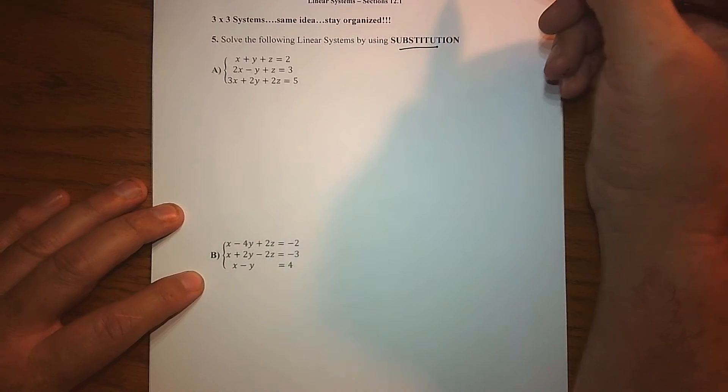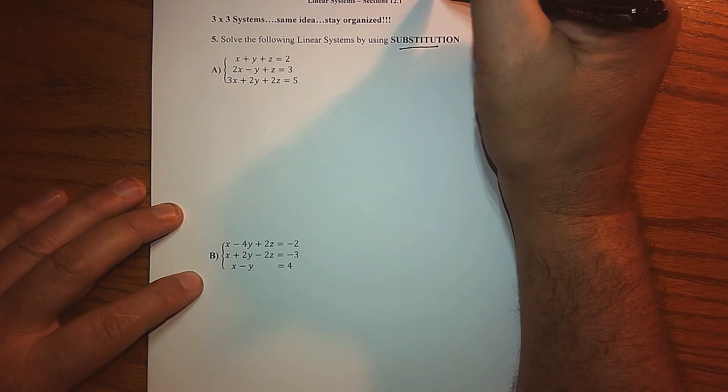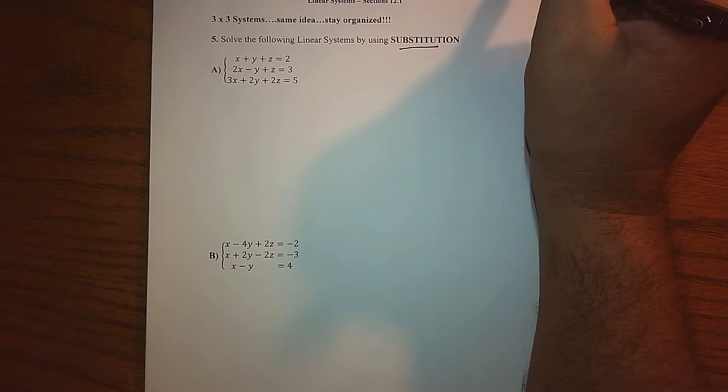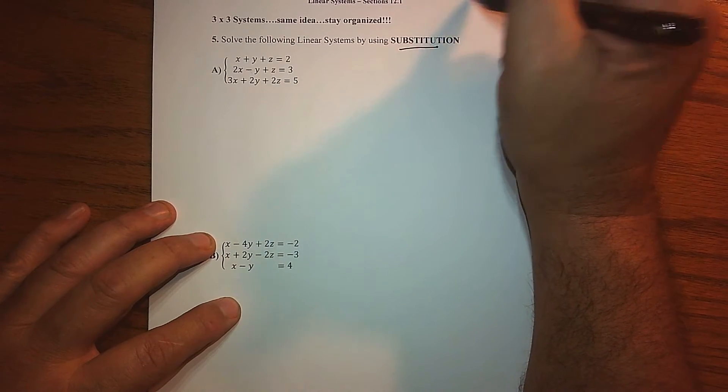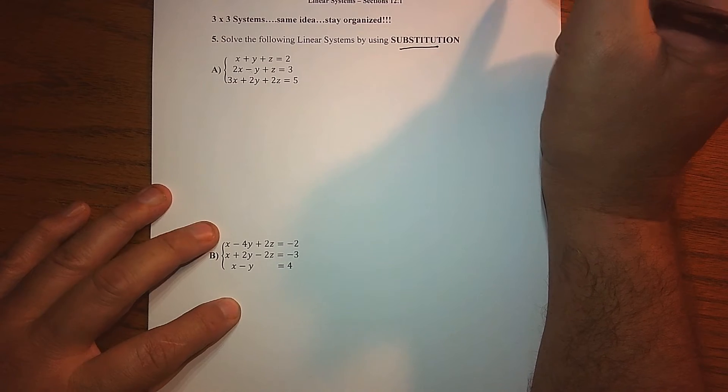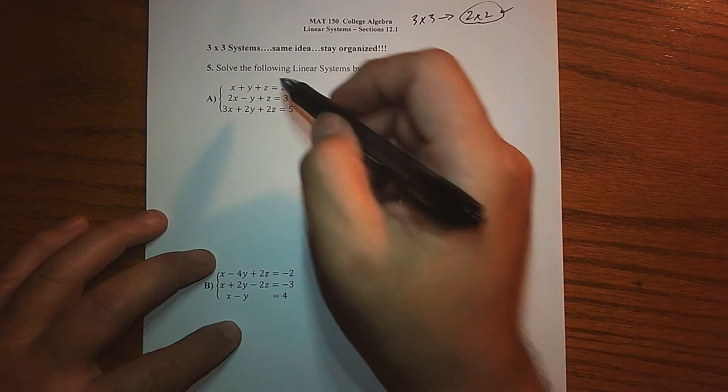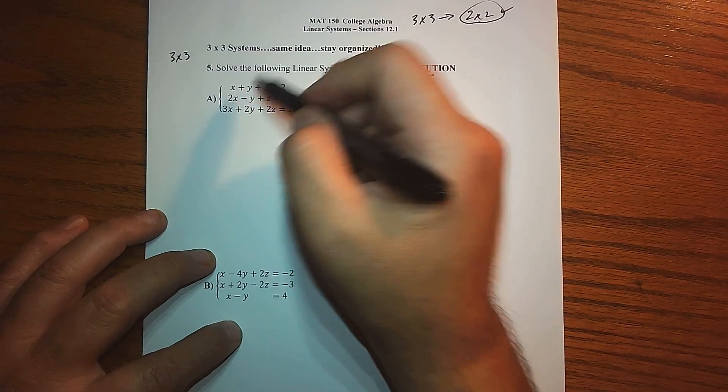We want to take a three by three system and convert it to a two by two system, because once I've converted to a two by two, we just learned how to solve that using that technique. So I right now have a three by three system - three equations and three unknowns.